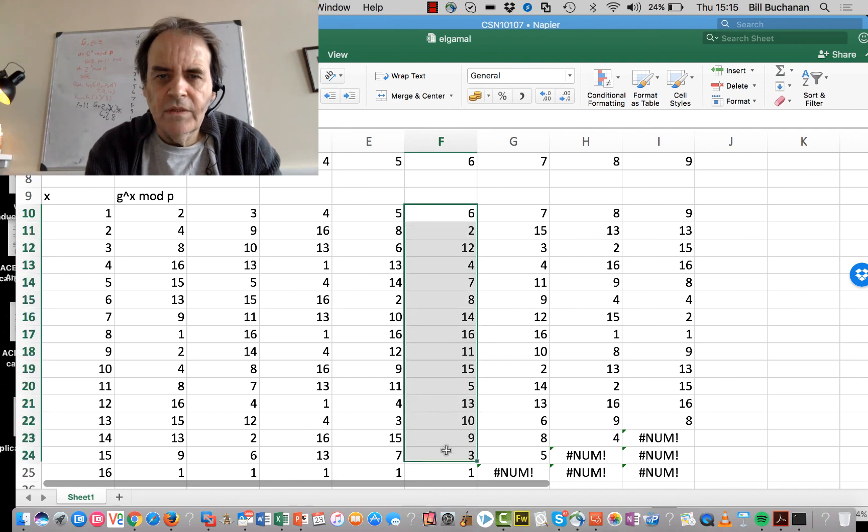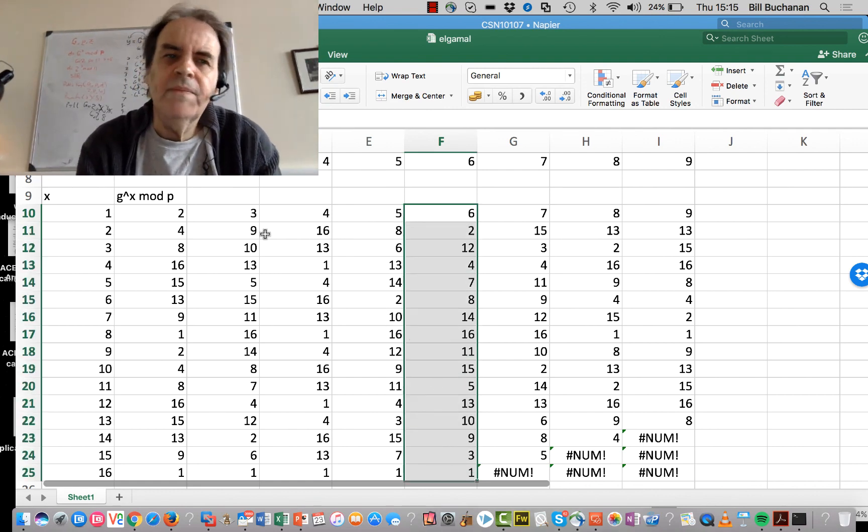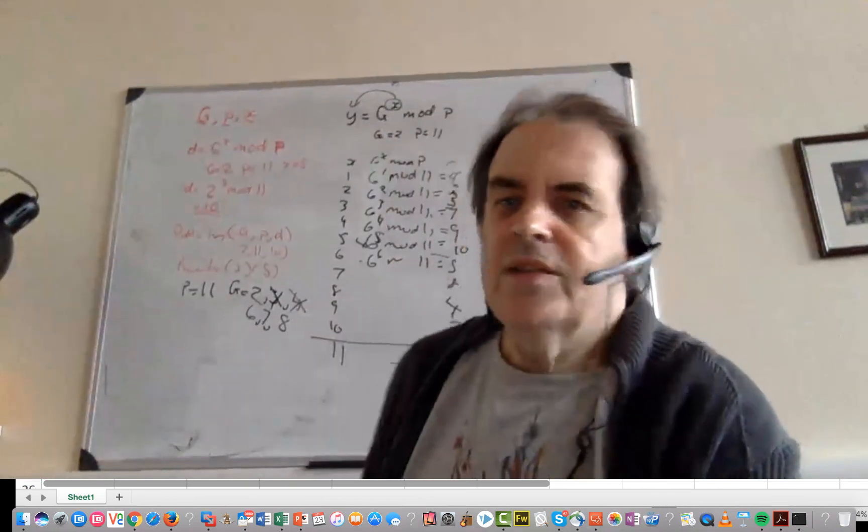And so on. This is how we calculate or determine if we can use a certain value of G.